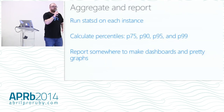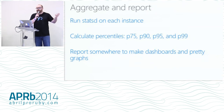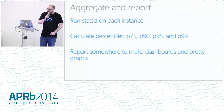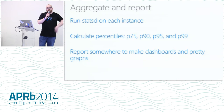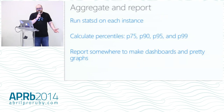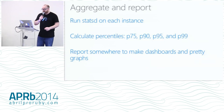We aggregate all this and report it. We run statsd on each of our Rails service nodes and calculate percentiles for each node — p75, p90, p95, and p99 — then report that to make dashboards and graphs. For us we use Librato and New Relic depending on what we're looking at. New Relic does quite a bit for you but gets expensive quickly; Librato takes a little more work but gives better customization at a different price point.